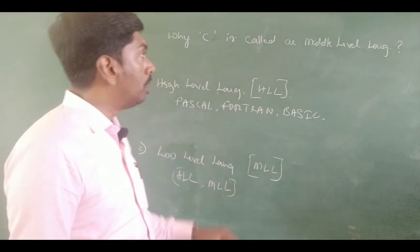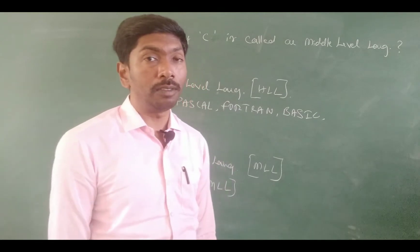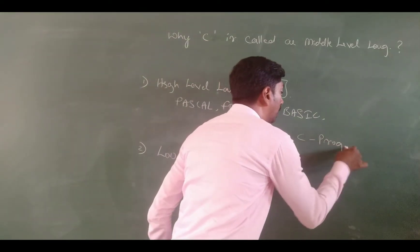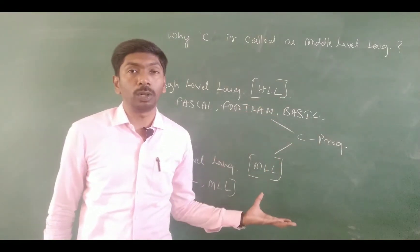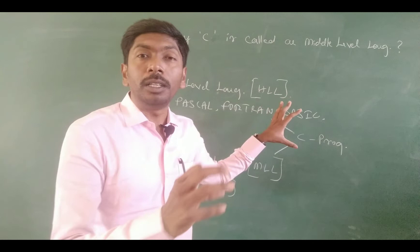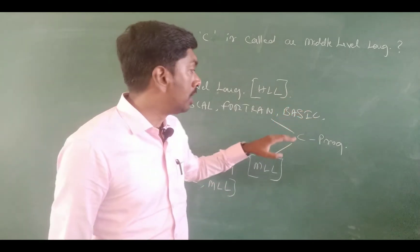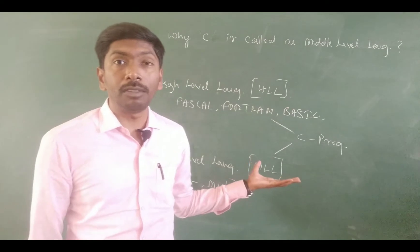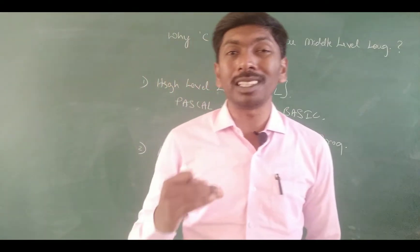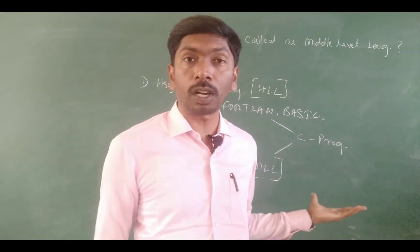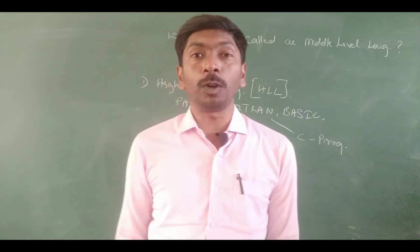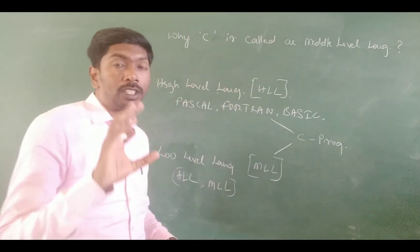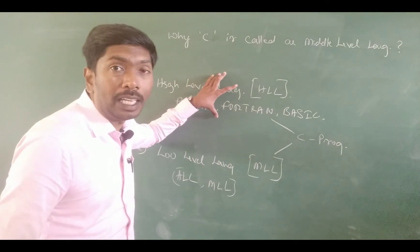This is why C is called a middle level language. C is the combination of both high level language and low level language. C programming uses English-type syntax with a compiler for machine instruction conversion, giving faster execution. Compared to high level languages, C programming execution speed is faster. That is why C is called a middle level language — it combines the features of both.